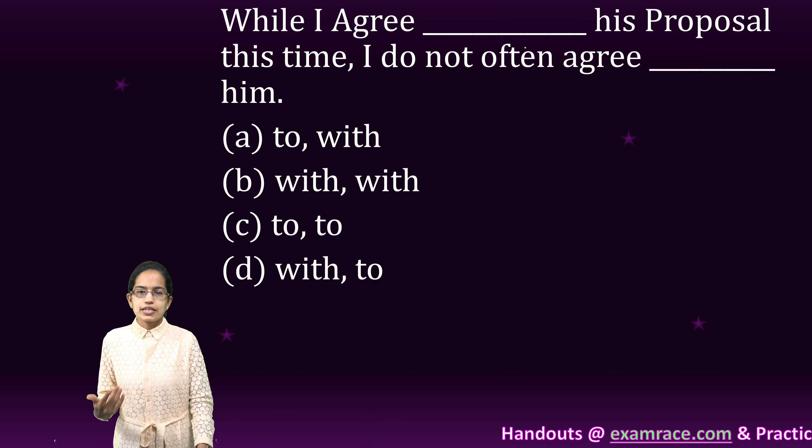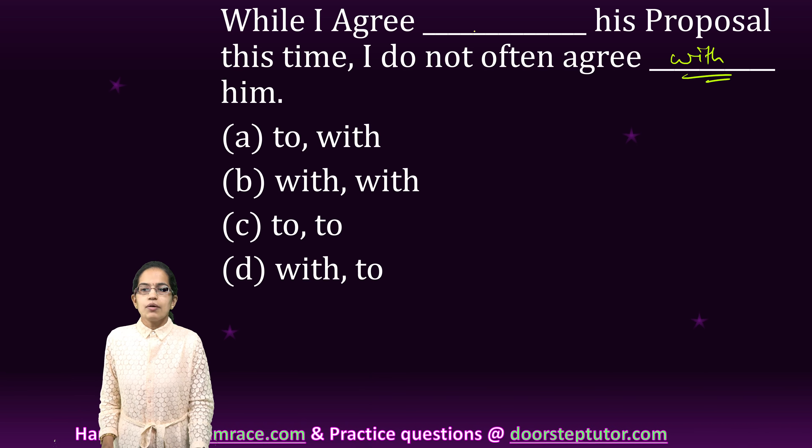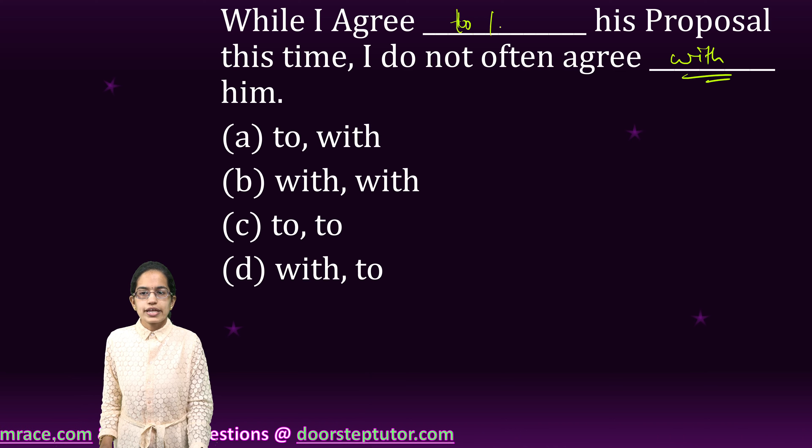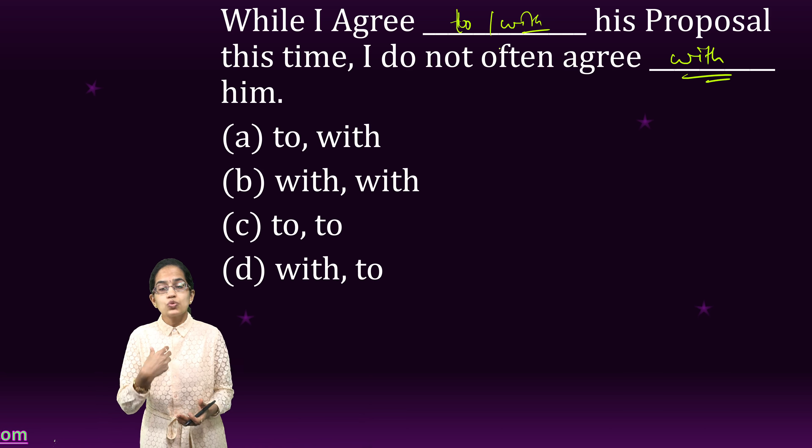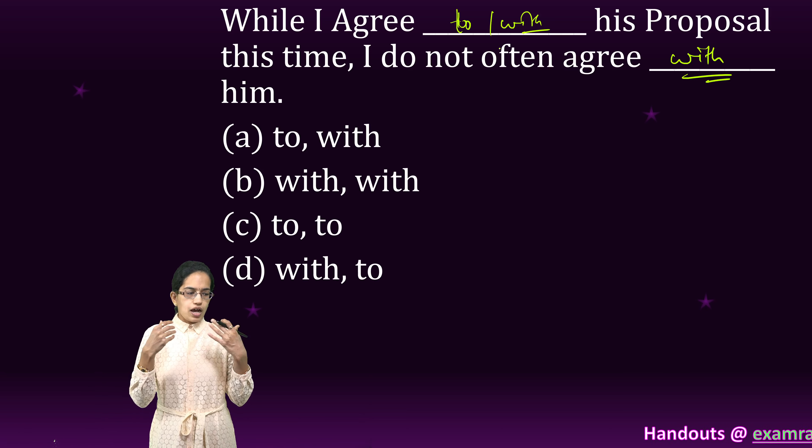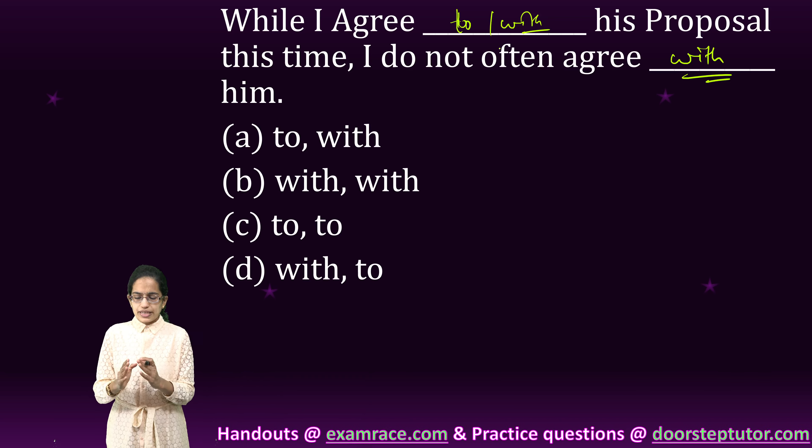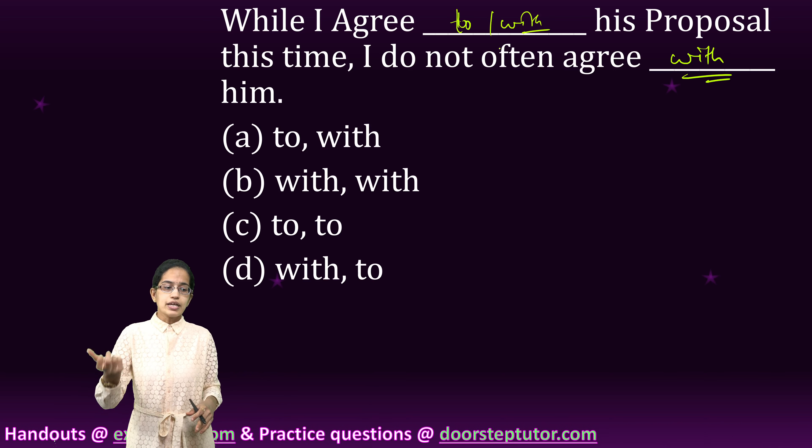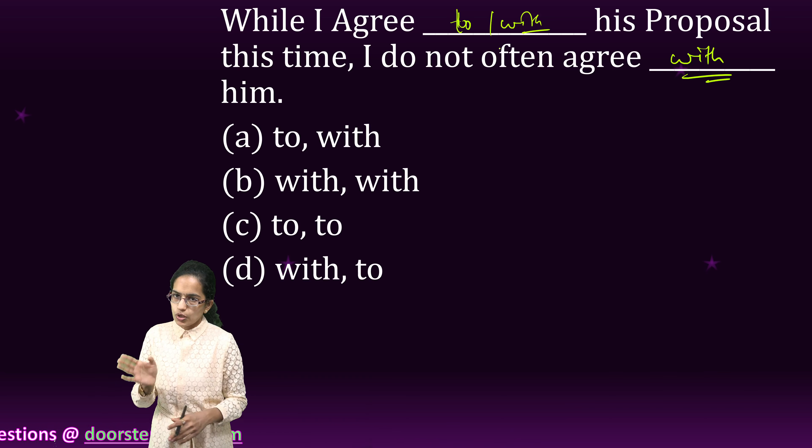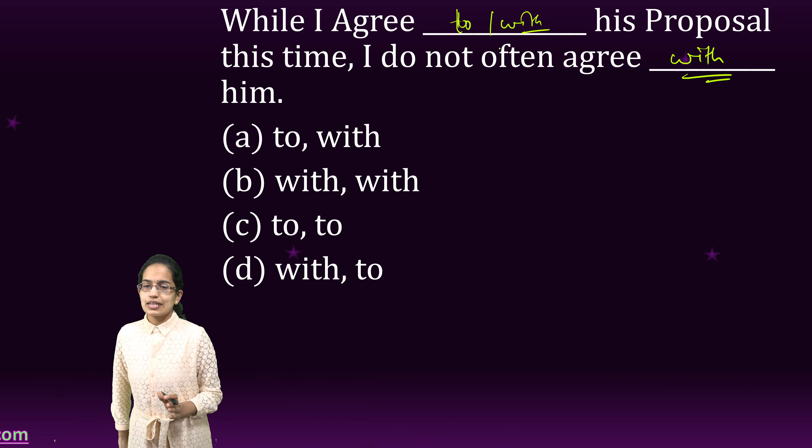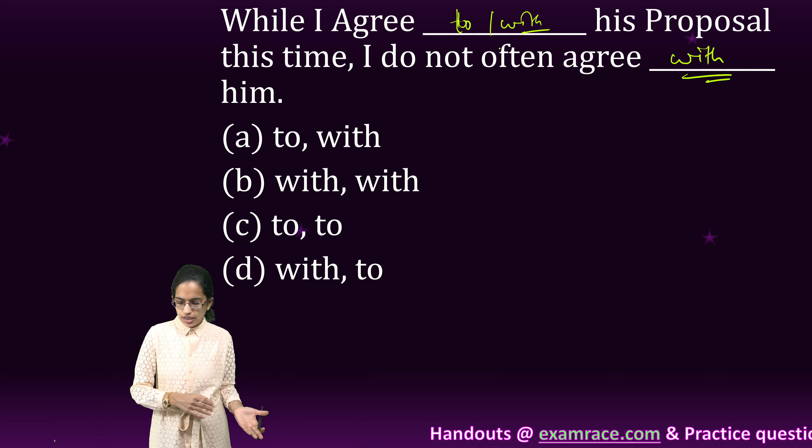While I agree to his proposal this time, I do not often agree with him. So we agree with a person, but we can either agree to a proposal or agree with a proposal. When I say to a proposal, that means it's my involvement and my acceptance to whatever you are suggesting. When I say I agree with the proposal, it basically means I am trying to understand it, comprehend it, and signal whether it sounds good to me or not, and then only I am going to accept or not. So both of these usages are technically correct, but most common usage we would say is to here. So I agree to his proposal and I agree with him would be the right options.